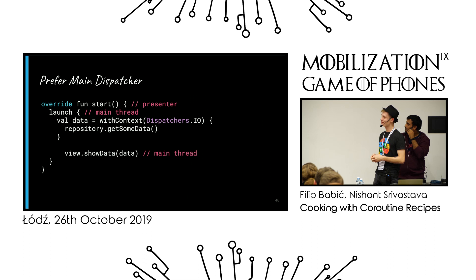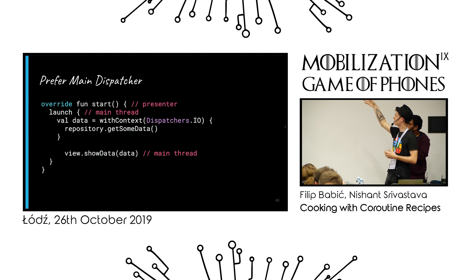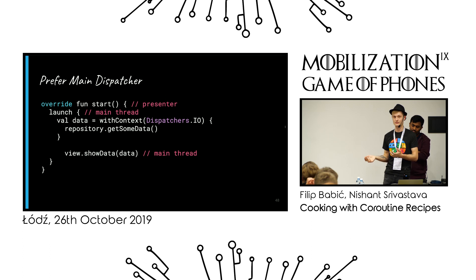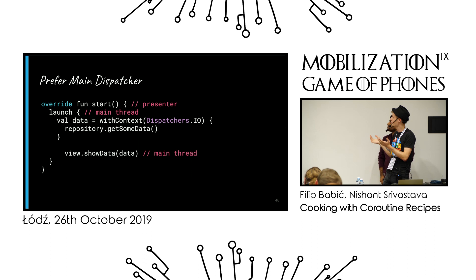You should always default to the main dispatcher. In that example, you just call launch knowing it's on the main thread, then switch to Dispatchers.IO using withContext to fetch data. You might think this blocks the thread, but it won't. Since it's a suspend function, it suspends the outer coroutine using the main thread, freeing it up for other work until the data arrives. Once the data is there, it shows it on the main thread — no system overhead, no computing overhead, and no cognitive burden on the developer.